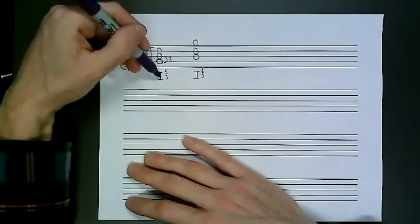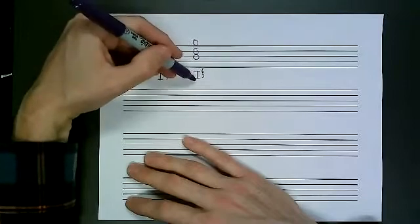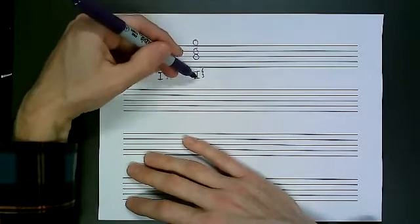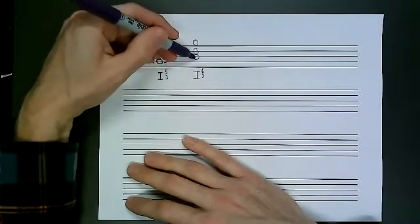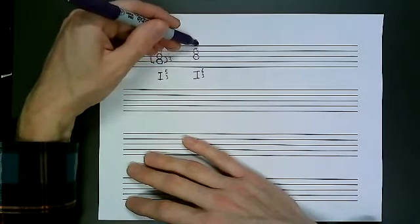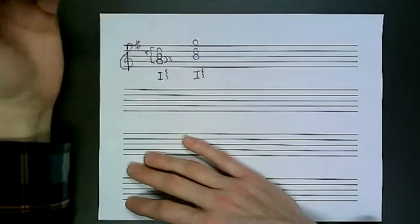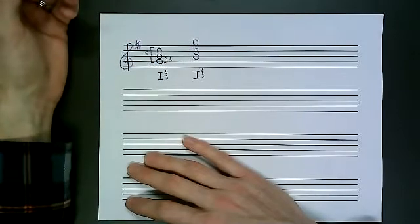So that's how we would label our first inversion. In root position five, three and first inversion, taking one off the bottom, it's a six, three, because based off of the base note, the B in this case, we have an interval of a six and a third. Don't worry about major or minor. That's all you got to do.